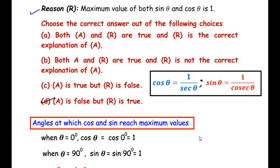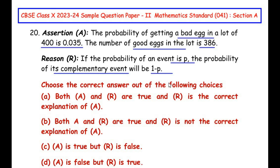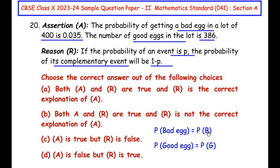Now let us move on to the 20th question, which is from the Probability chapter. The assertion says: the probability of getting a bad egg in a lot of 400 is 0.035, and the number of good eggs in the lot is 386. The reasoning is: if the probability of an event is P, the probability of its complementary event is 1 - P. There are two events here: probability of getting a bad egg, P(B), and probability of getting a good egg, P(G).